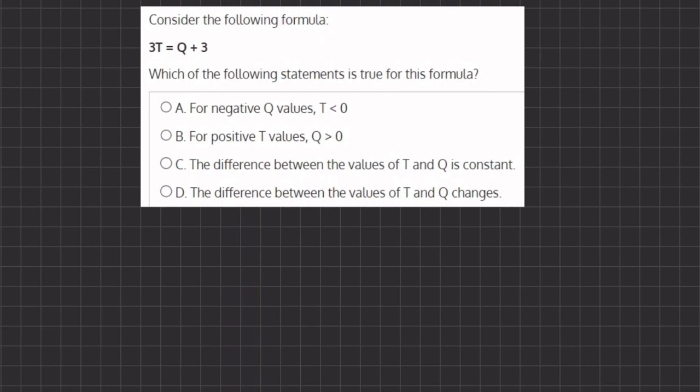So let's start off with option A. We have here, for negative q values, t is less than 0, meaning that t will be negative.